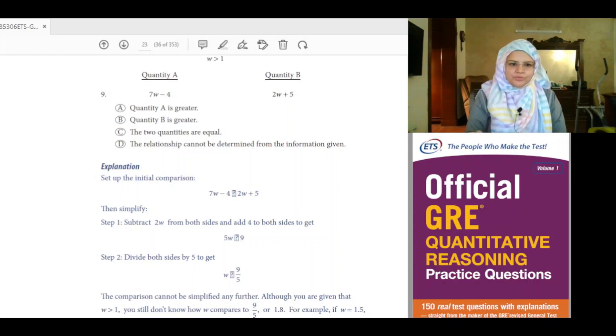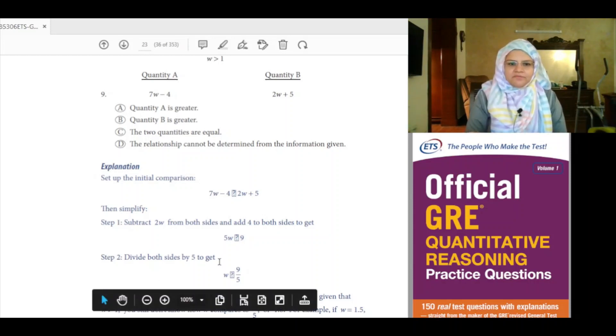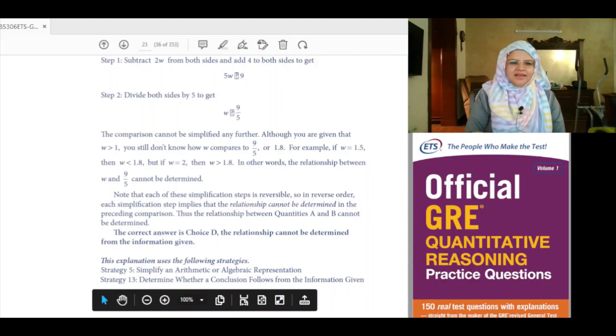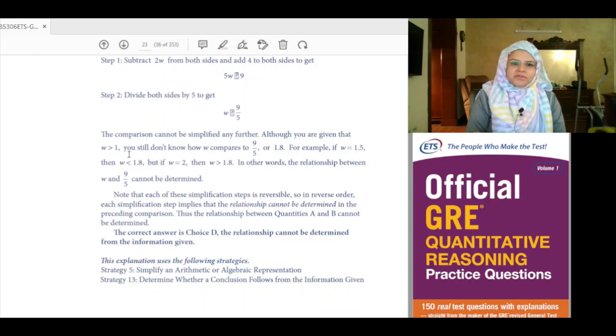Step 2: Divide both sides by 5 to get W versus 9 over 5. The comparison cannot be simplified any further. Although you are given W is greater than 1, we still don't know how W compares to 9 over 5 or 1.8.